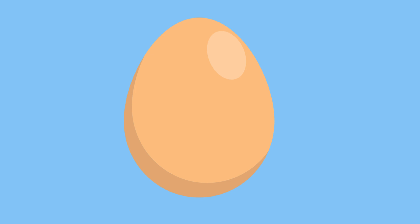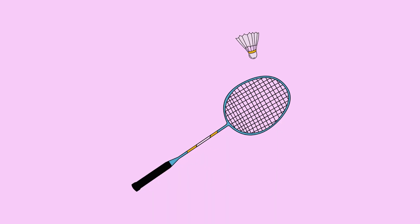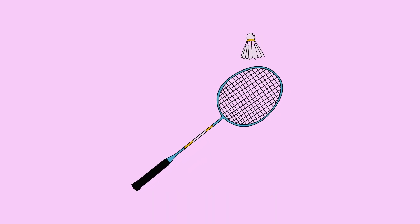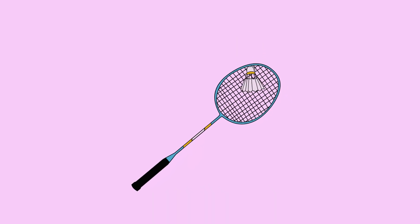Oval. Egg is in oval shape. Racket is in oval shape.